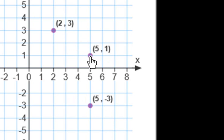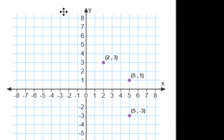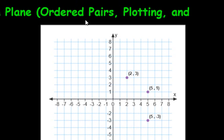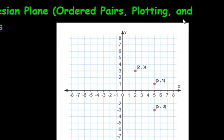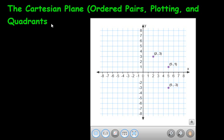What we are doing here is called plotting. We are plotting ordered pairs. Look at the title. Ordered pairs, plotting, and quadrants. Okay, I'll quickly mention quadrants too before we do some more difficult examples.